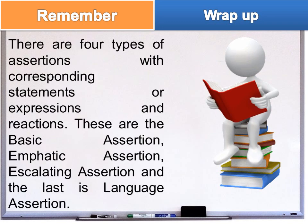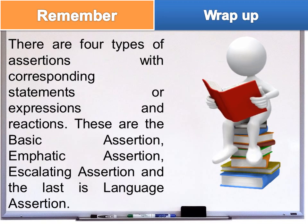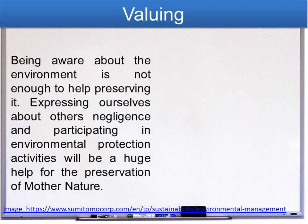To sum up, always remember that there are four types of assertions with corresponding statements, expressions, and reactions. These are: Basic Assertion, Emphatic Assertion, Escalating Assertion, and Language Assertion. Being aware about the environment is not enough to help preserve it — expressing ourselves about others' negligence and participating in environmental protection activities will be a huge help for the protection of Mother Nature.